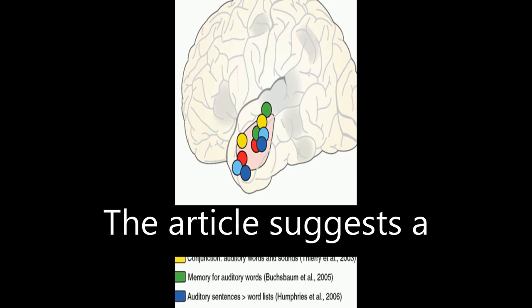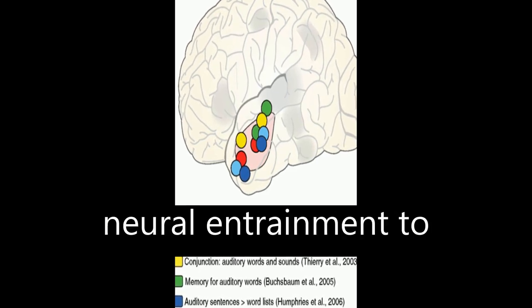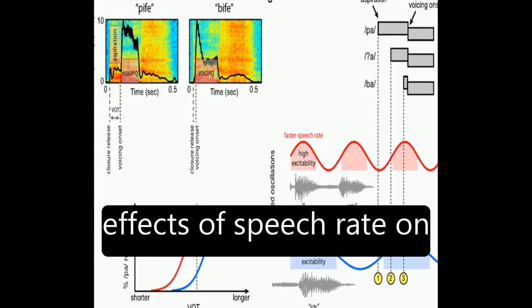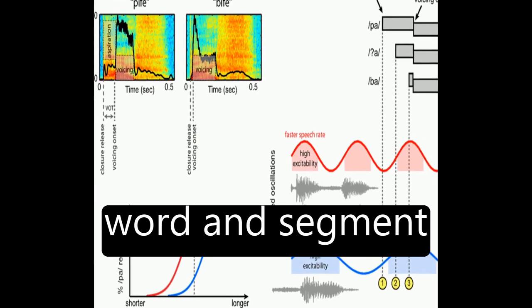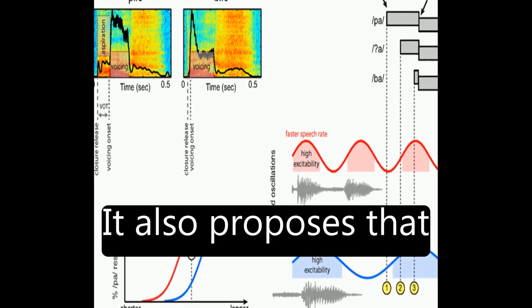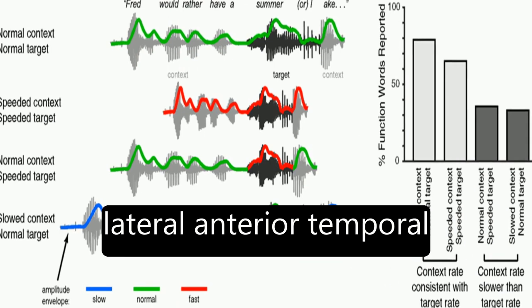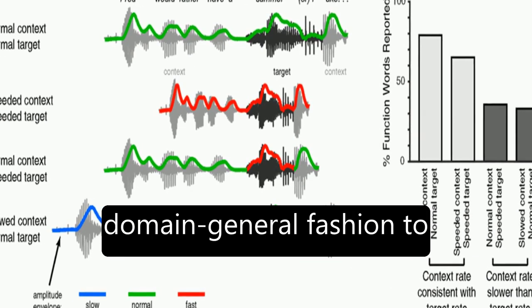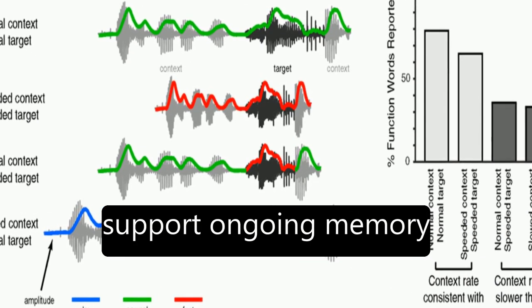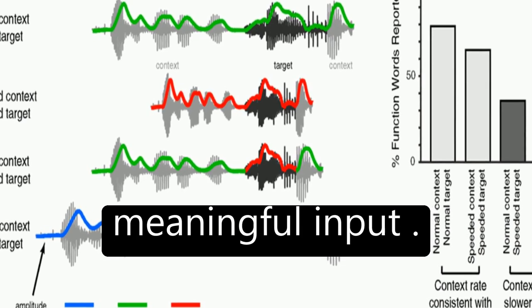The article suggests a framework through which neural entrainment to speech rhythm can explain effects of speech rate on word and segment perception. It also proposes that lateral anterior temporal cortex functions in a domain-general fashion to support ongoing memory and integration of meaningful input.